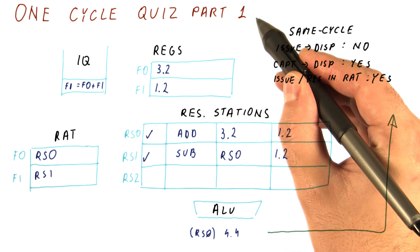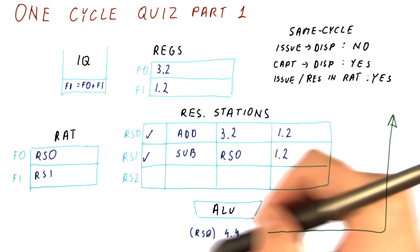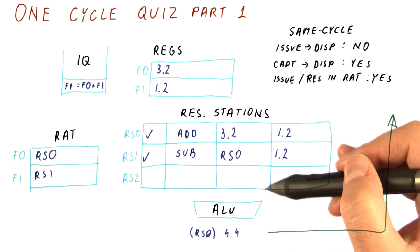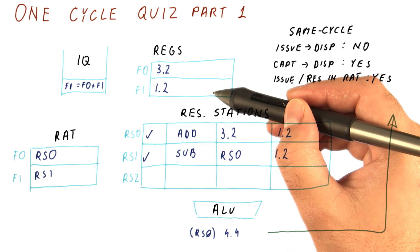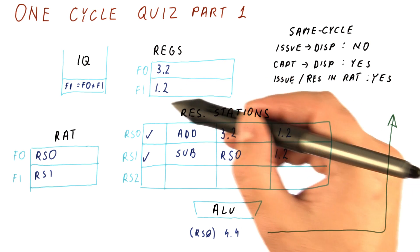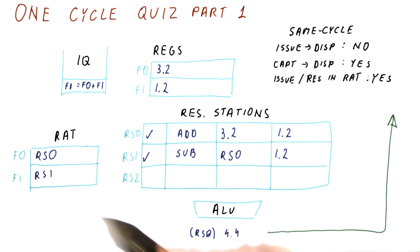The first part of this quiz is at the end of the cycle, whose beginning we are looking at here, what will be the content of the two RAT entries and the two registers. So, after the end of this cycle, what's going to be here, here, here, and here?